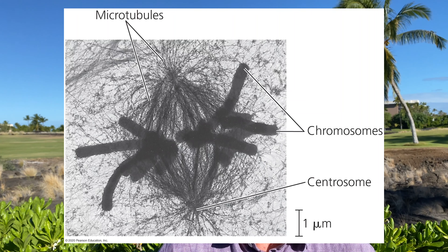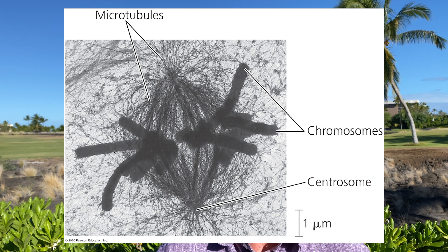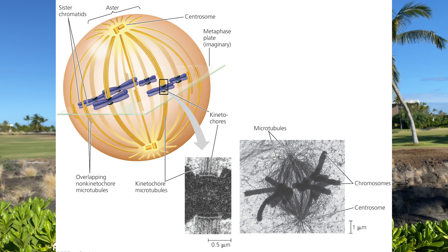The first stage of mitosis is known as prophase. Chromatin becomes condensed into discrete chromosomes, and each duplicated chromosome appears as two identical sister chromatids joined at the centromere. The mitotic spindle apparatus is formed from the centrosomes, and as the microtubules extend from them and radiate out, some of these spindles will attach to the kinetochores on the centromeres.